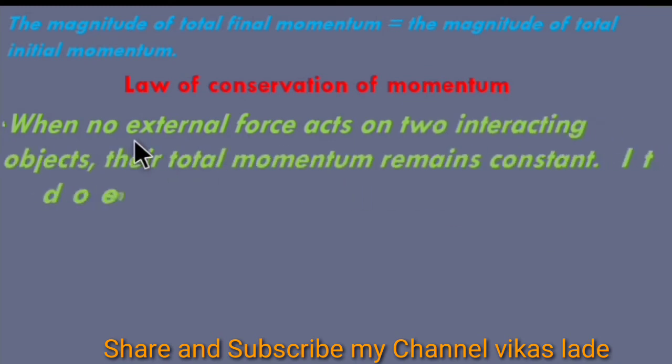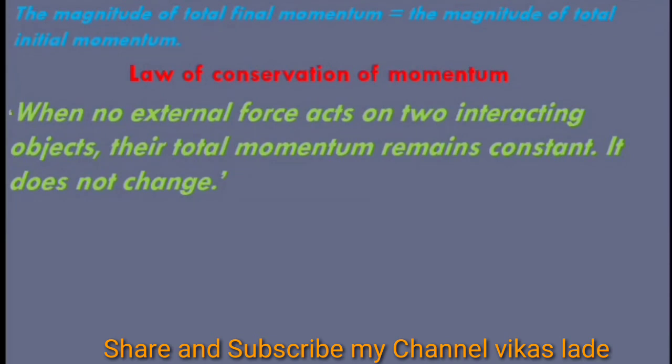The Law of Conservation of Momentum: When no external force acts on two interacting objects, their total momentum remains constant; it does not change. This is a corollary to Newton's third law of motion. The momentum is unchanged. After the collision, the momentum gets redistributed between the colliding objects. The momentum of one of the objects decreases while that of the other increases. Thus, we can also state this corollary as follows: When two objects collide, the total momentum before the collision is equal to the total momentum after collision.